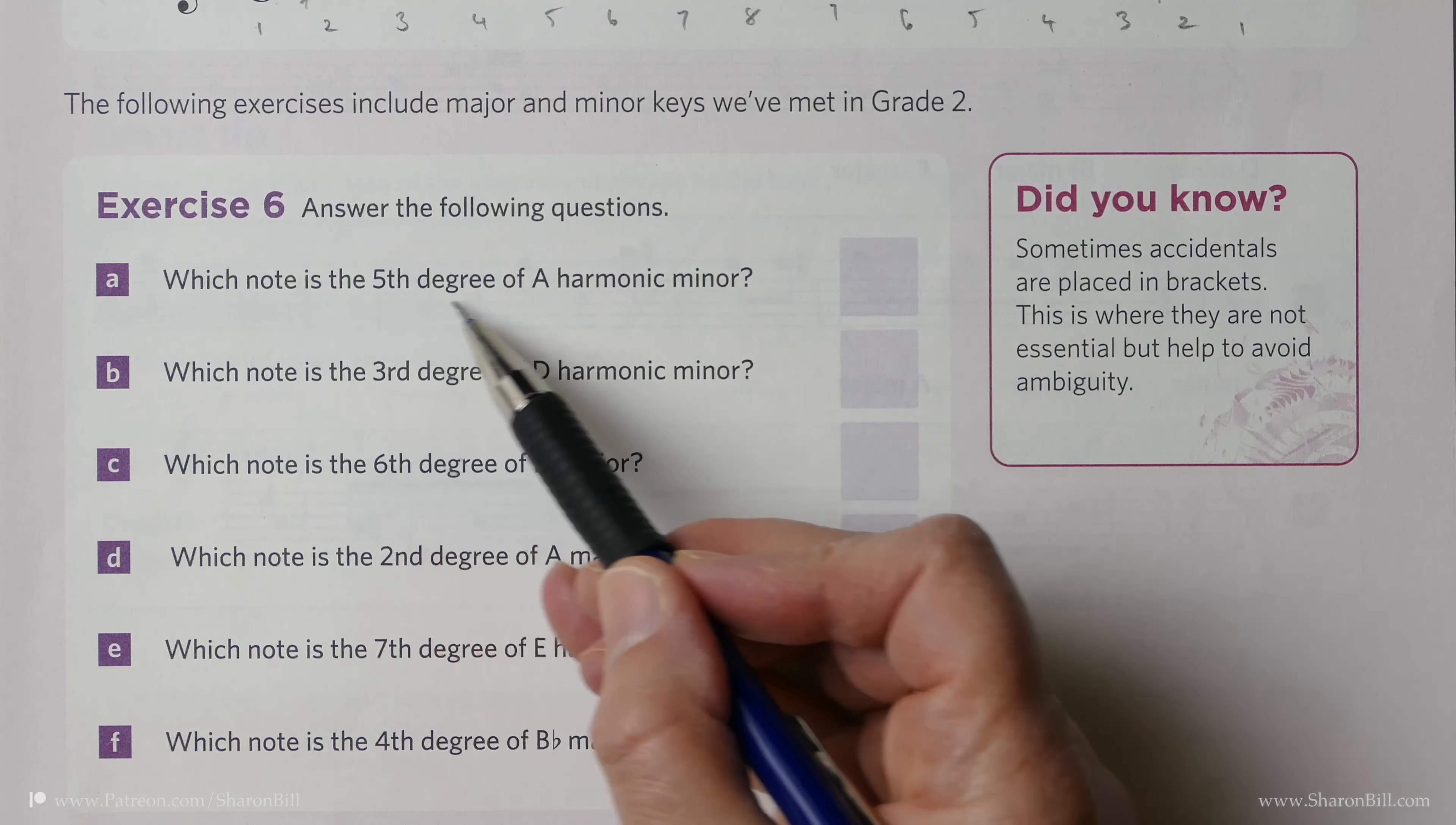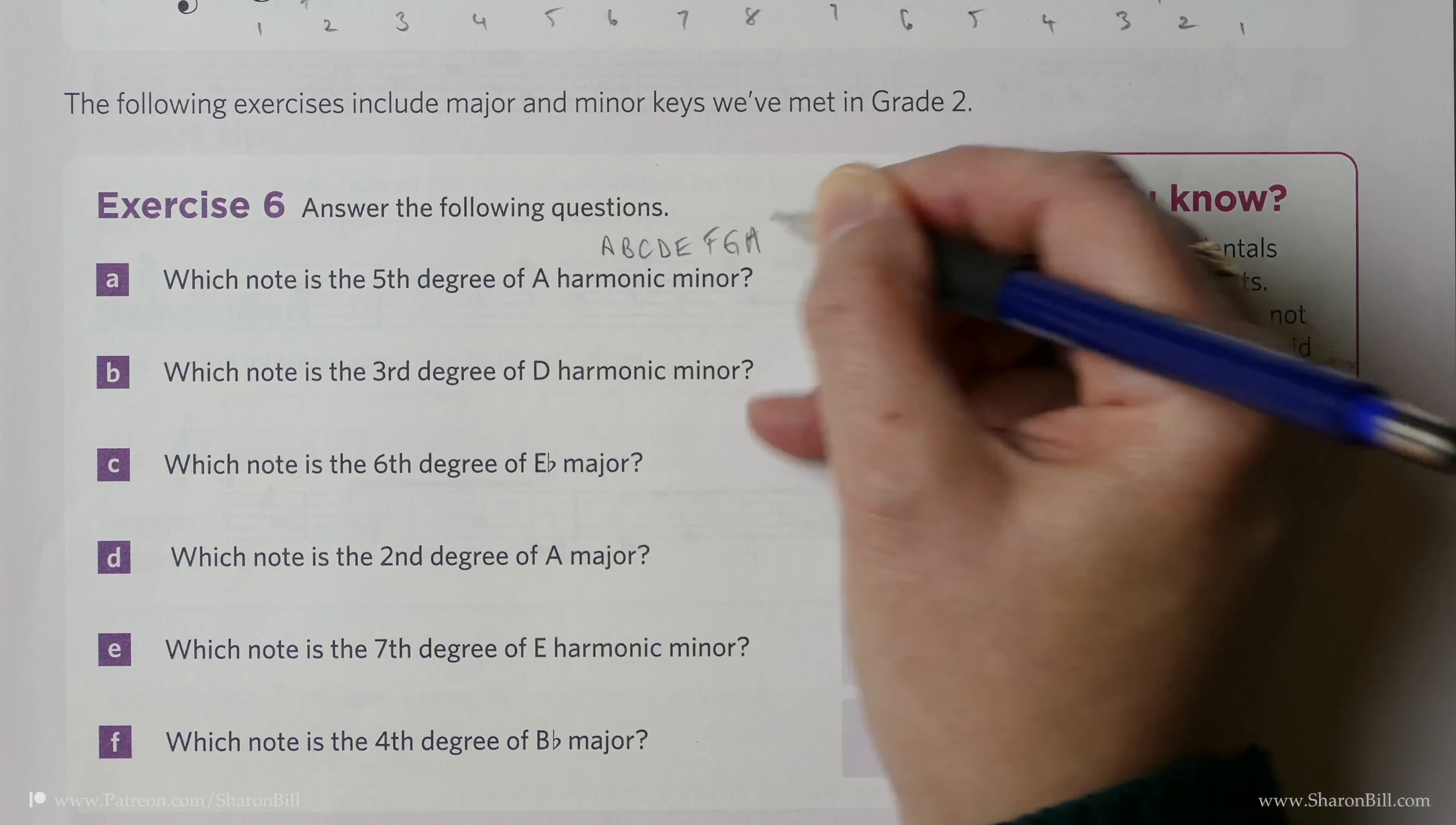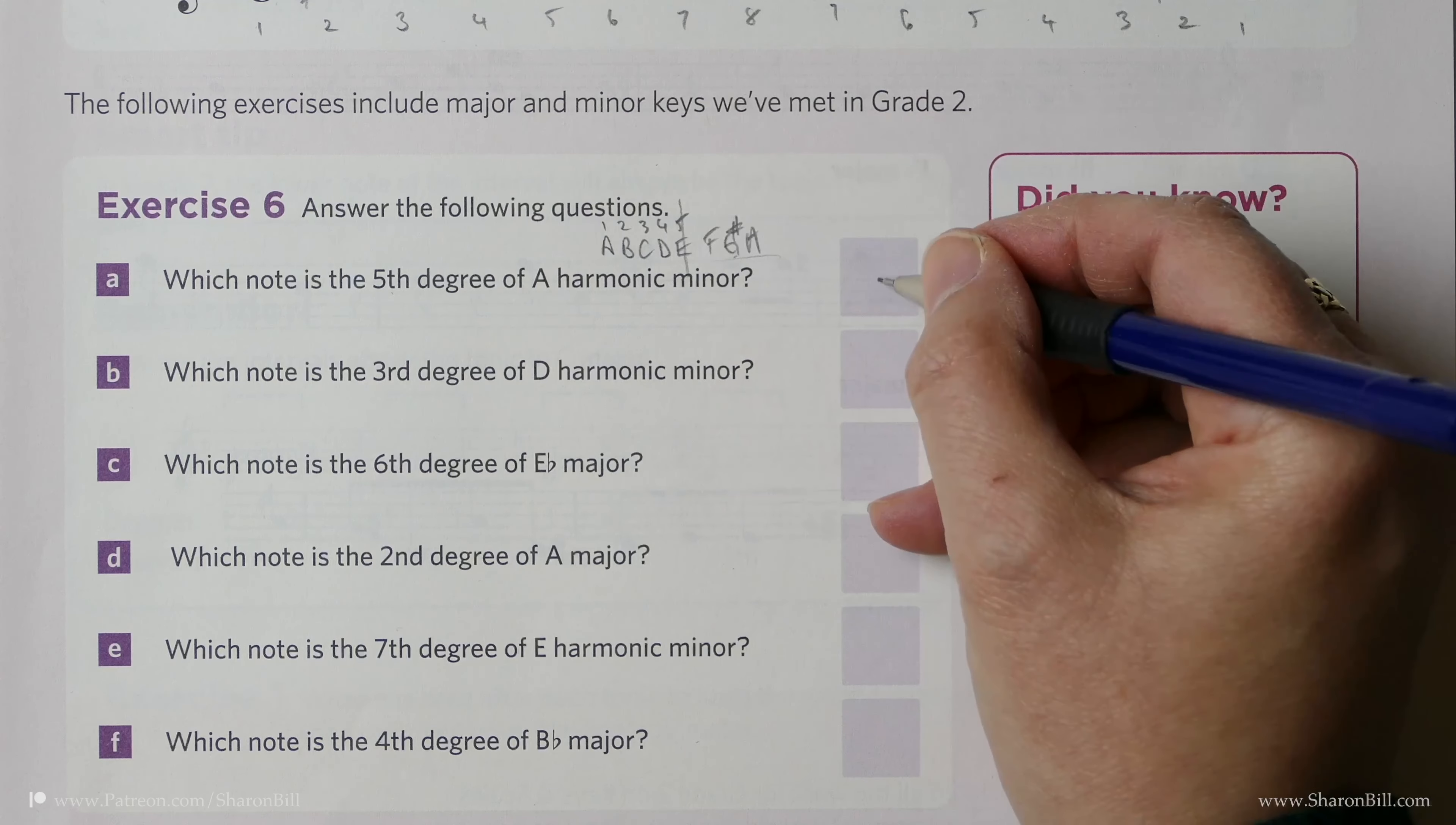We're asked which note is the 5th degree of A harmonic minor, and so we can just easily step that out and go A, B, C, D, E, F, G, A. There's our whole octave—we've done more than required here. We know that the 7th is raised so that will be a G sharp, but we only need to go to 5: 1, 2, 3, 4, 5, and so we know the answer is E.